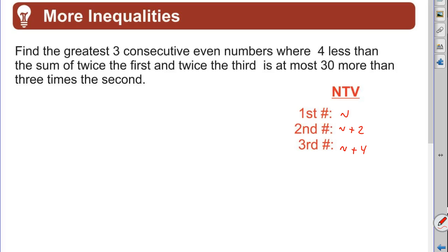Consecutive odd, consecutive even are always N, N plus two, N plus four. If we had another one it would be N plus six, fourth one, fifth one N plus eight, etc. Okay, I like to do my symbol next.